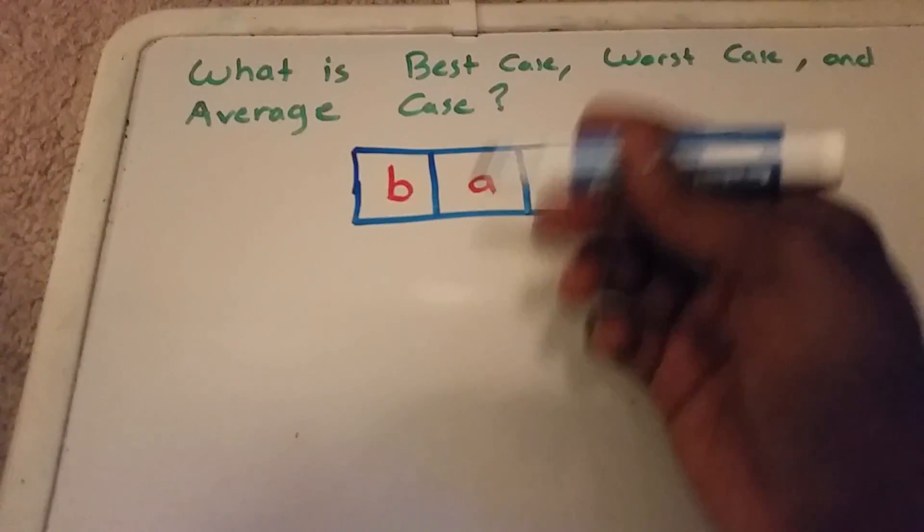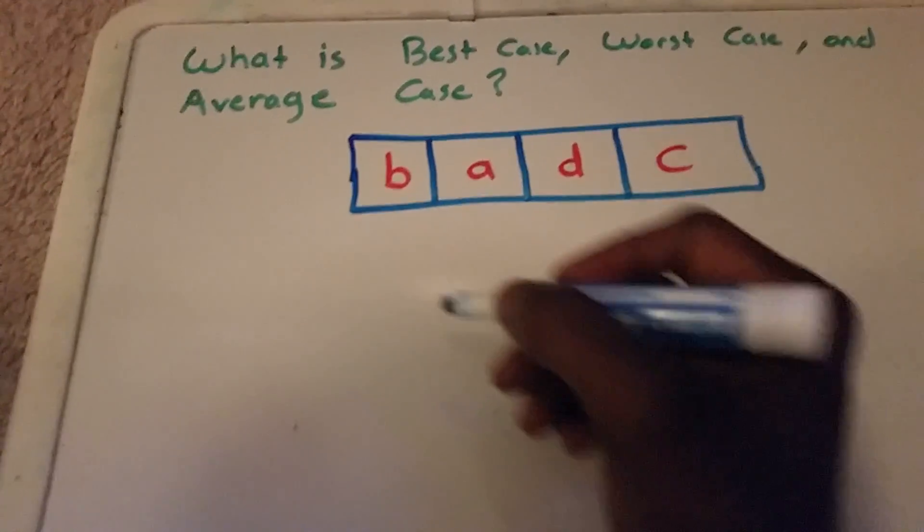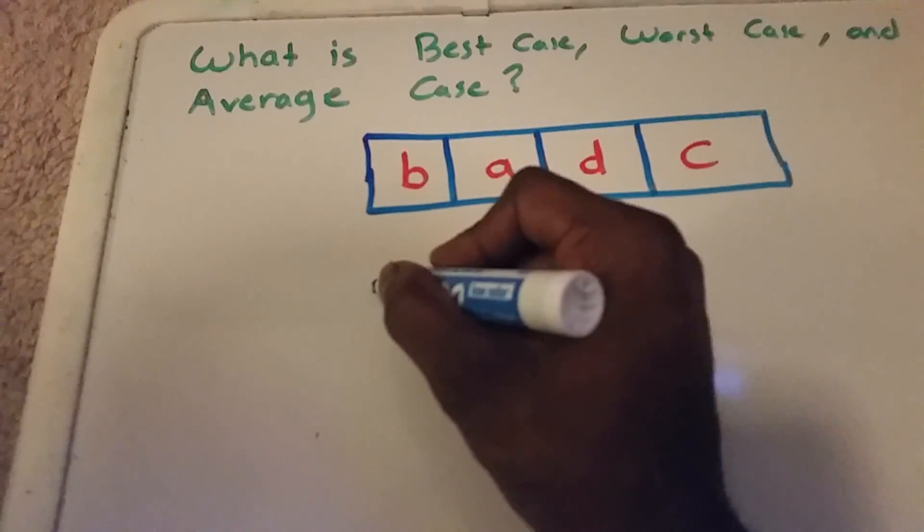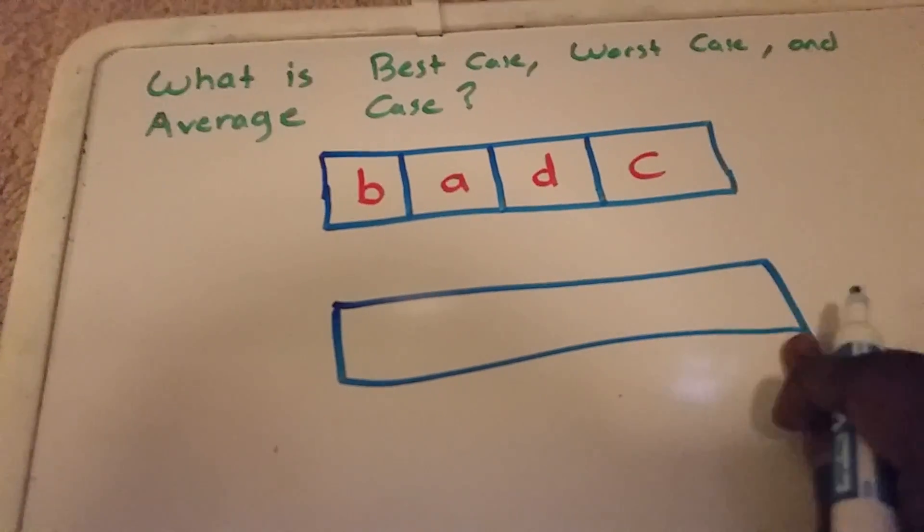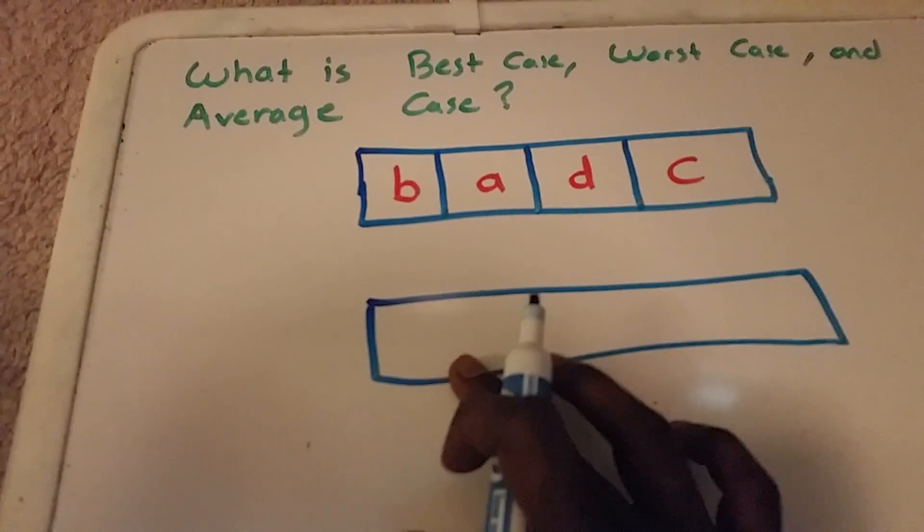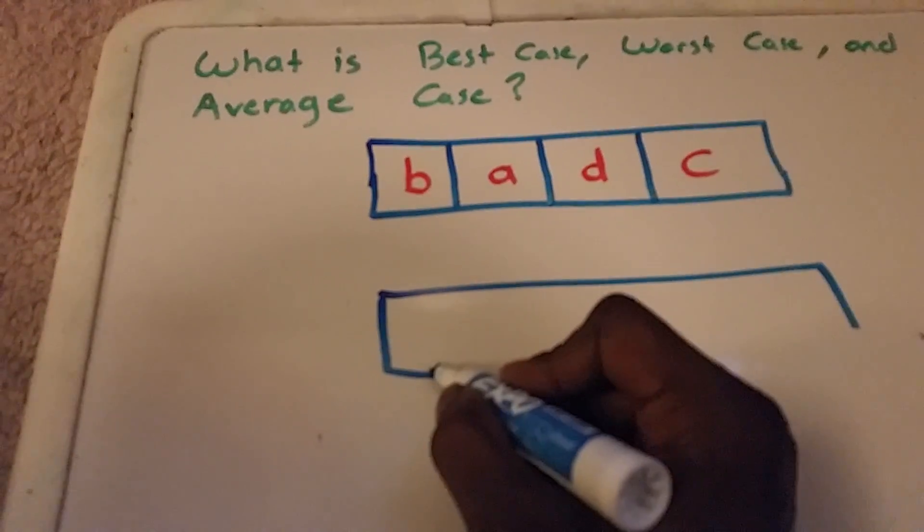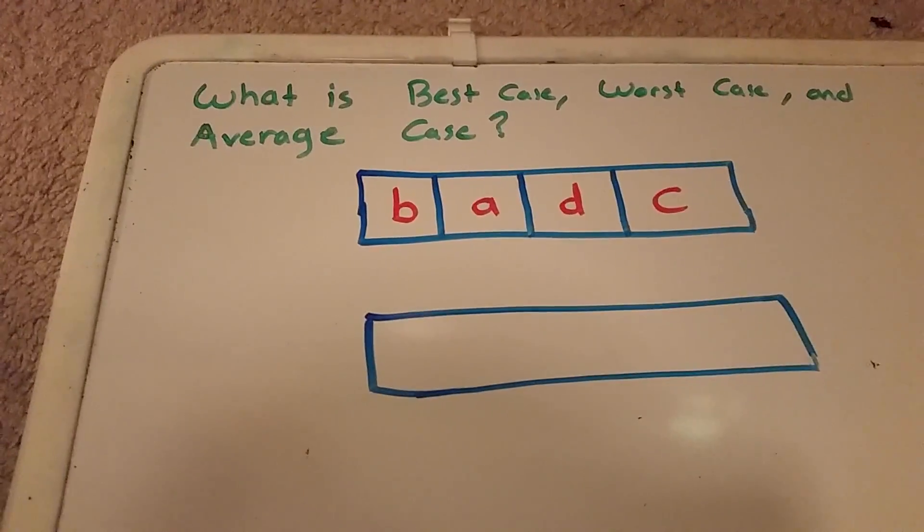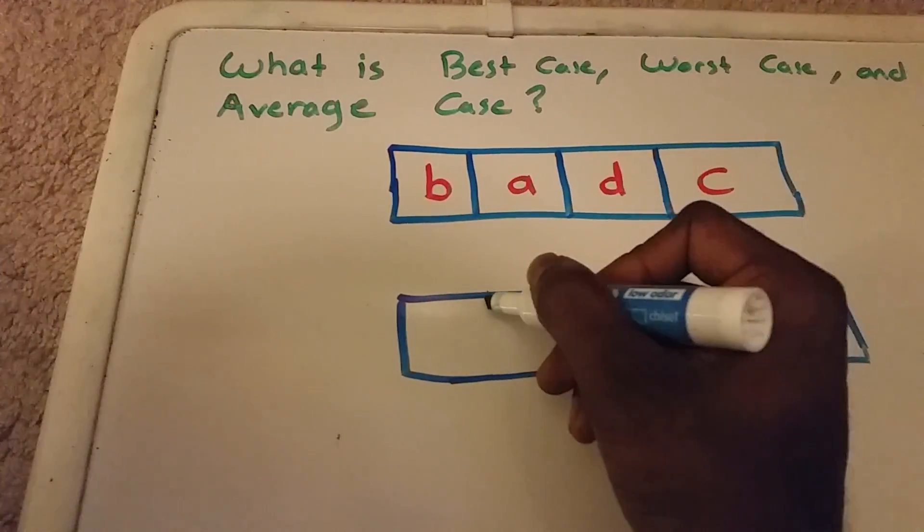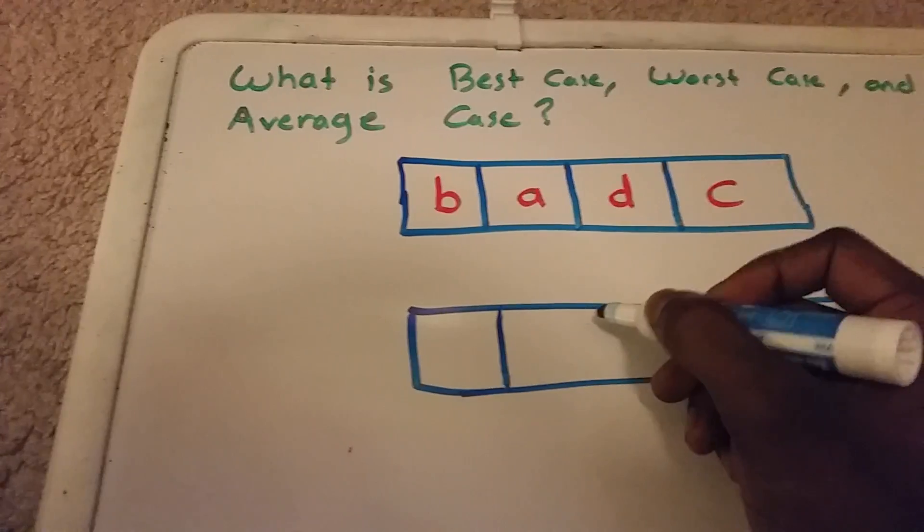Well the best case would be the optimal solution. And the optimal solution would be if they are already sorted. And that way my algorithm that I create won't have to do much work.